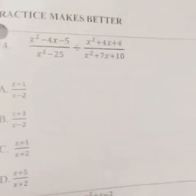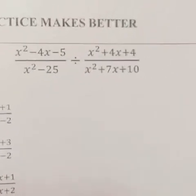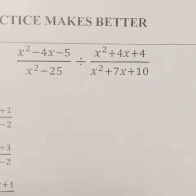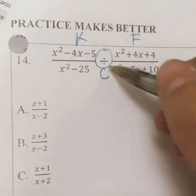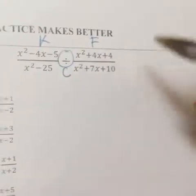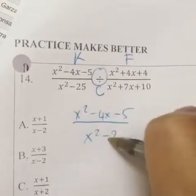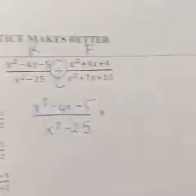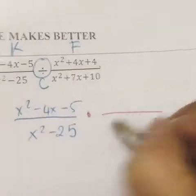Now let's look at a practice problem: (x squared minus 4x minus 5) over (x squared minus 25) divided by (x squared plus 4x plus 4) over (x squared plus 7x plus 10). Since this is division, we use KFC — keep the first fraction the same, change the sign to multiply, and flip the second fraction so the top becomes the bottom and the bottom becomes the top.